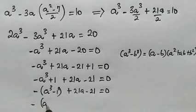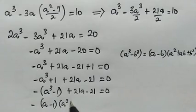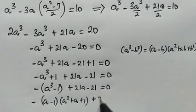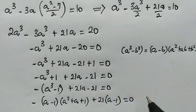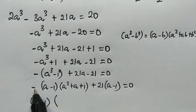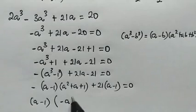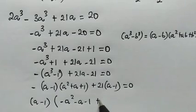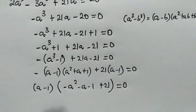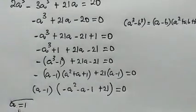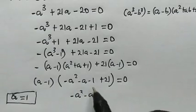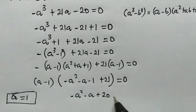We can see that a minus 1 is a common factor, so we factor it out. We get a minus 1 times negative a squared minus a minus 1 plus 21, equals 0, which simplifies to a minus 1 times negative a squared minus a plus 20, equals 0. Setting a minus 1 equals 0 gives a equals 1. Solving the quadratic gives a equals negative 5 and a equals 4.